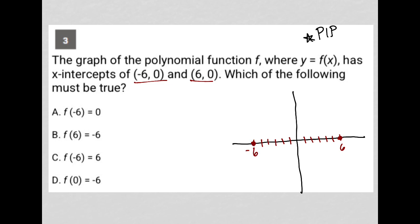Which of the following must be true? Well, let's see. f of negative 6 equals 0. So, what does that mean? That means that when x equals negative 6, y equals 0. That is definitely true. That is the definition of an x-intercept. That is this point right here. So, this must be our correct answer.